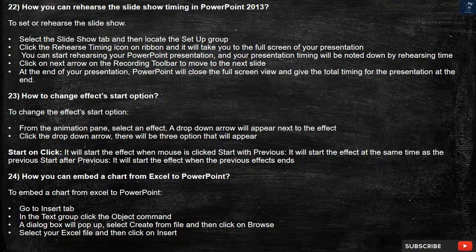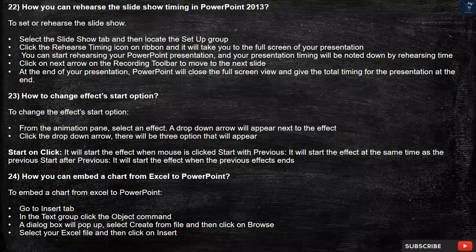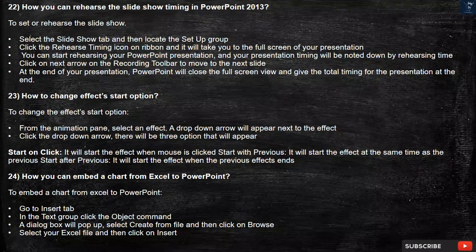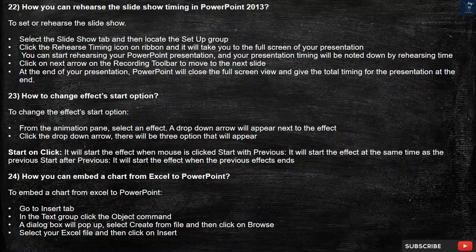Question 22: How can you rehearse slideshow timing in PowerPoint 2013? To set or rehearse the slideshow, select the Slideshow tab and then locate the Setup group. Click the Rehearse Timing icon on the ribbon and it will take you to the full screen of your presentation. You can start rehearsing your PowerPoint presentation and your timing will be noted down. Click on the Next arrow on the recording toolbar to move to the next slide. At the end of your presentation, PowerPoint will close the full screen view and give the total timing.